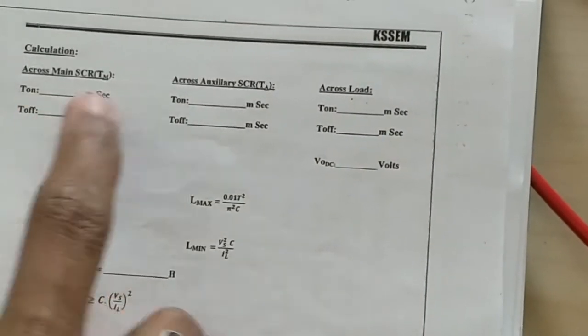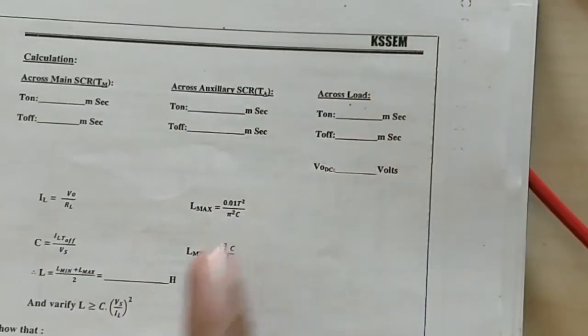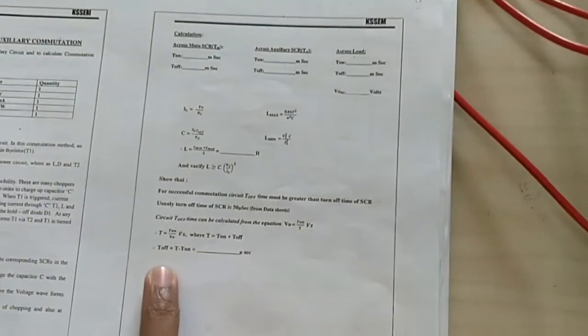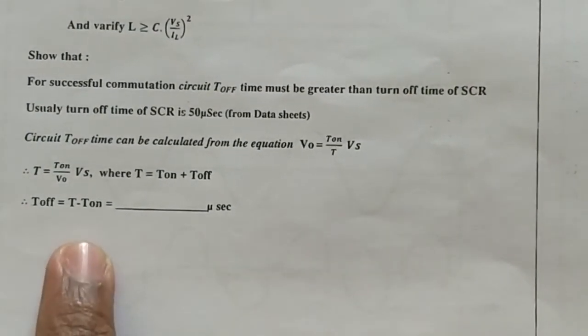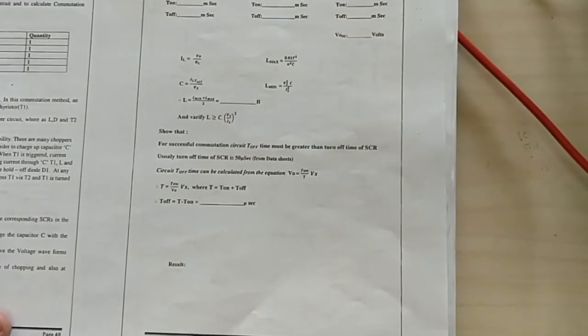And then just plug in the values back here for SCR1, SCR2 and across the load, and then you will be able to get the time T off, wherein the time taken for this circuit to forcefully turn off. That's it guys, thank you.